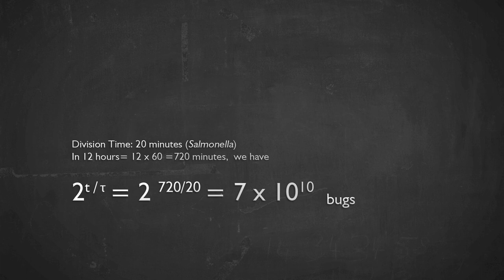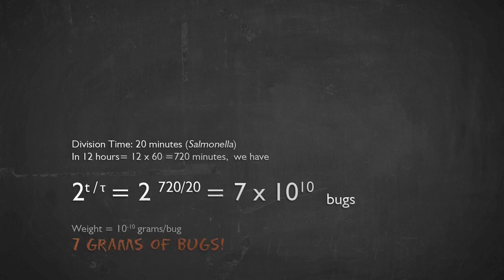Will you be able to see them? Every Salmonella bacterium weighs about 10^-10 grams. But if you wait 12 hours until you have 7 × 10^10 of them, that means you will have 7 grams of bacteria on your cheese. Seven grams is enough that if spread out nicely, you'll be able to see it.